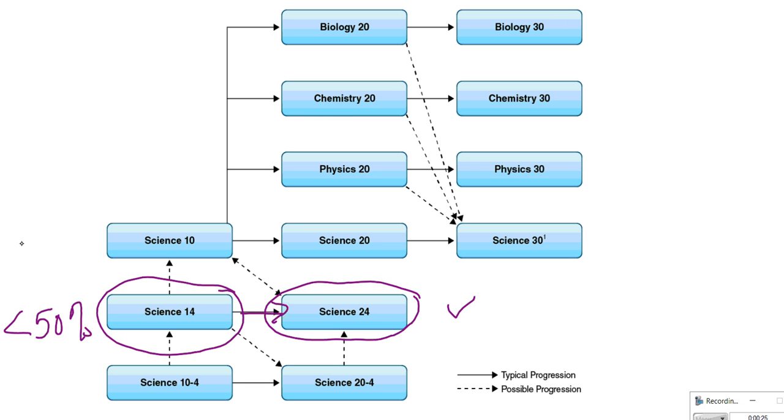If your overall mark in Science 9 is between 50 and 60%, you need to talk to both your current science teacher and a science teacher or counselor at the high school to determine if you would be successful in Science 10. A lot will depend on your math skills, your interest level, and your work ethic. You have the option of enrolling in Science 10 or in Science 14.